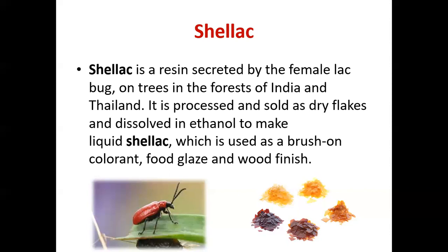The raw product from the lac bug must be processed before it can be marketed. The dry flakes are dissolved in ethanol to make liquid shellac, which is used as a brush-on colorant, food glaze, or wood finish. It is used for modifying or beautifying surfaces — a brush-on colorant enhances the appearance of a color, food glaze enhances food appearance, and it also serves as wood finish.